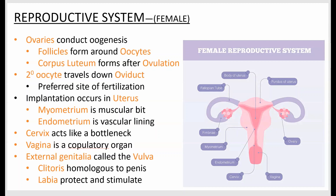The vagina, contrary to popular belief, is not an external structure — it's an internal tube. It is also a copulatory organ where sperm are deposited. You may have heard it called the birth canal, but similar to how the penis also functions in urination because it's in the way, the vagina serves as a birth canal simply because the baby has to pass through it.